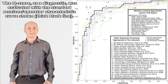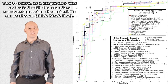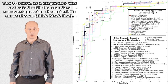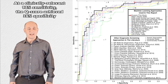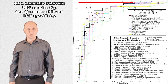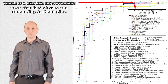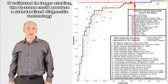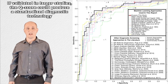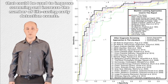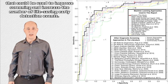The Q-score, as a diagnostic, was evaluated with the standard receiver-operator characteristic curve, shown in thick black line. At a clinically relevant 98% sensitivity, the Q-score achieved 36% specificity, which is a marked improvement over standard of care and competing technologies. If validated in larger studies, the Q-score could produce a standardized diagnostic technology that could be used to improve screening and increase the number of life-saving early detection events.